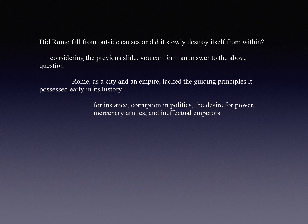Look at some of the problems that plagued Rome toward the end. Corruption in politics — politics became all about bribery, and the desire for power went hand in hand with corruption. The army was no longer made of loyal Romans; it was made up of mercenaries, hired soldiers who were loyal only to the money, not to the Roman Empire. And finally, you had ineffectual emperors — some were so cruel and ineffectual that they were themselves assassinated.